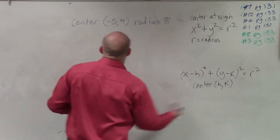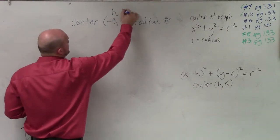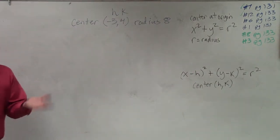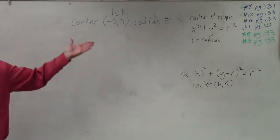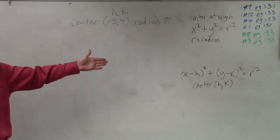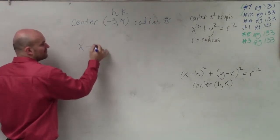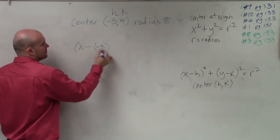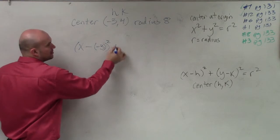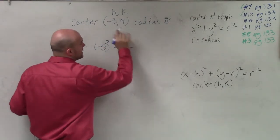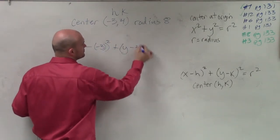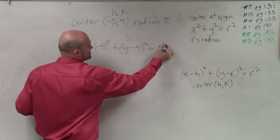And remember, the center is h, k. So I can label h and my k. Now, all I'm simply going to do is plug in those values into my equation. So I have x minus a negative 3 squared plus y minus a positive 4 squared equals 8 squared.